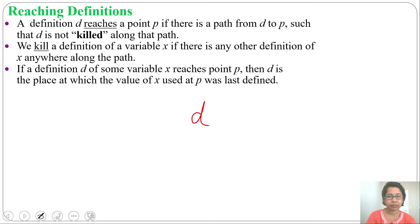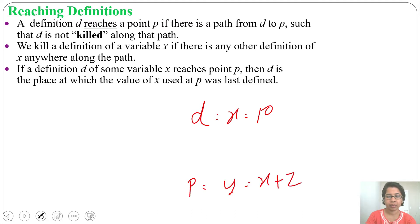Suppose D is one definition, let X equal to 10, and it is reaching point P. Let in P: Y equal to X plus Z. Here this definition is reaching point P, which means X was last defined in this definition.